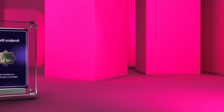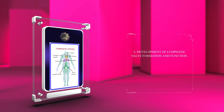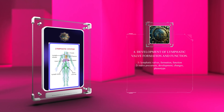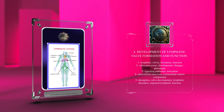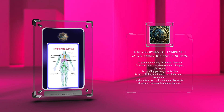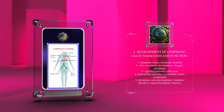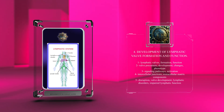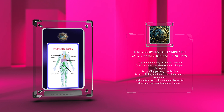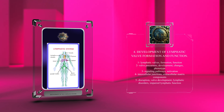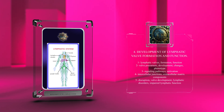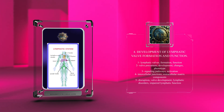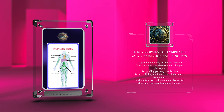The formation and function of lymphatic valves are essential for maintaining proper lymphatic flow. During development, specific endothelial cells called valve precursors undergo complex changes and acquire a valve-forming phenotype due to the activation of signaling pathways. The formation of intercellular junctions and extracellular matrix components also play a role in the morphogenesis and functioning of lymphatic valves.